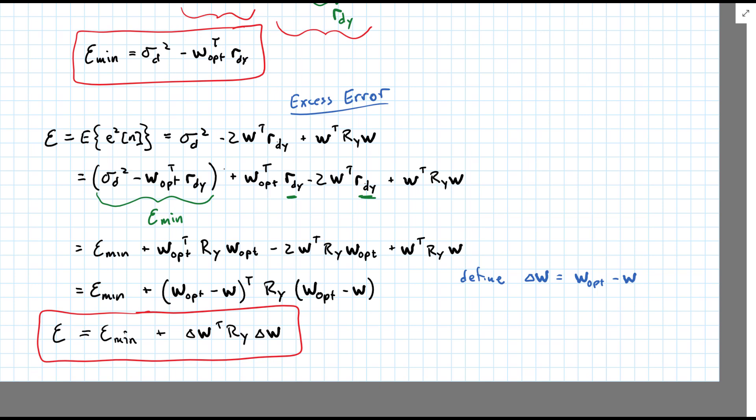then the amount of difference is not going to be amplified very much by R_y. On the other hand, if delta W was in the same direction as the eigenvector associated with an eigenvalue of 100, a small deviance would include now a large gain in the error. We'll revisit this some more later.